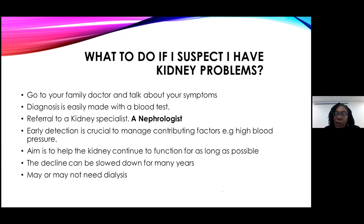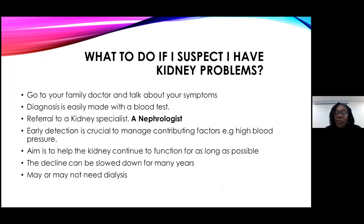If kidney disease is found at stage one or two, that's when they can help with diet control and blood pressure management to really delay the onset of dialysis. I've had patients who had renal problems and knew about it for maybe ten or more years before they eventually needed to be on dialysis. Early detection is crucial, and managing contributing factors from high blood pressure and diabetes is a way to help protect your kidney. The aim is to keep you off dialysis and slow the decline for as long as possible.